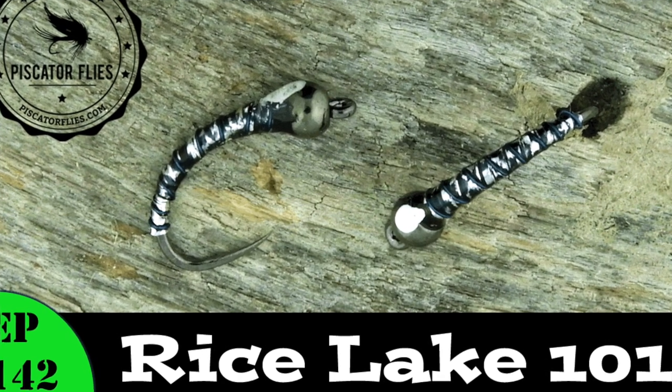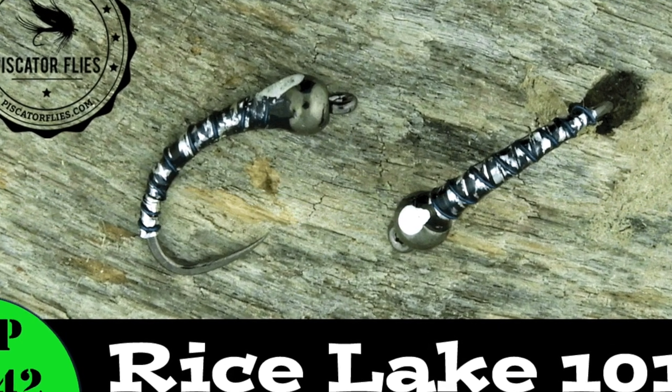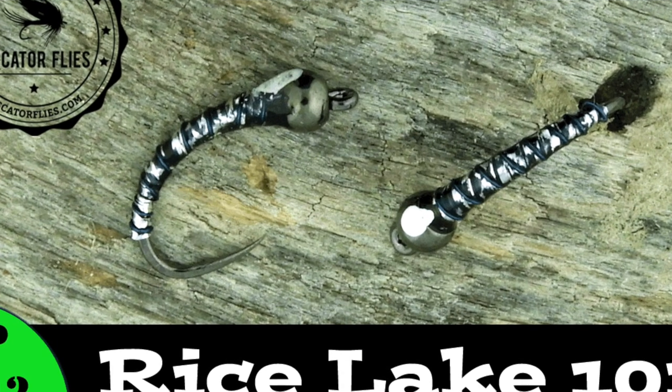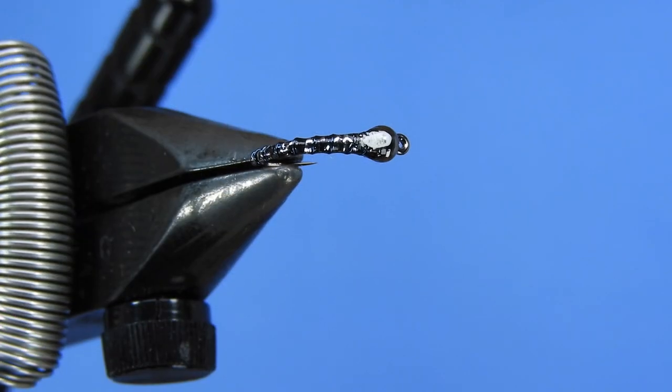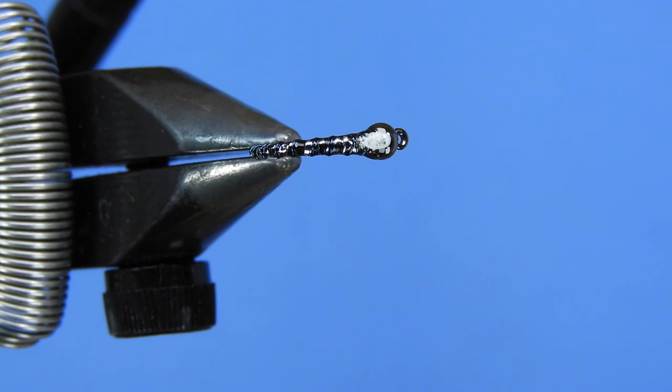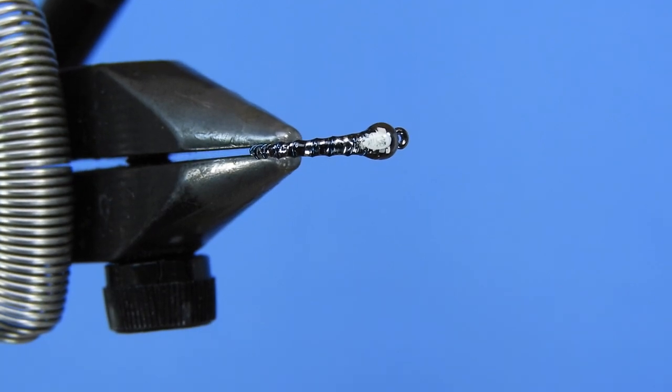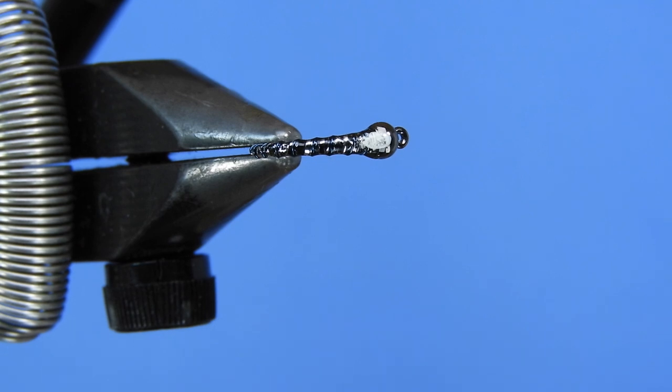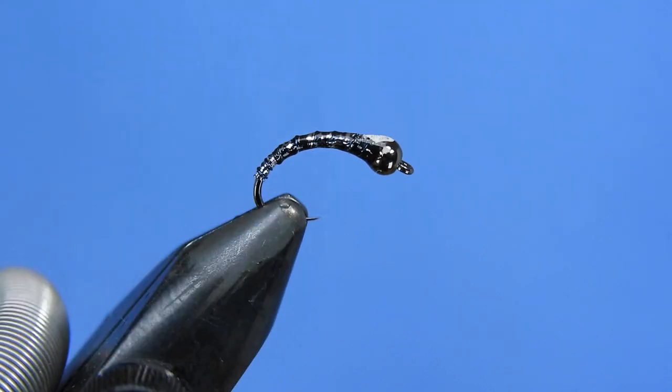Hey threadheads, welcome back to another fly tying tutorial. Today we're going to be tying something I've been developing over the summer. This one is something I call the Rice Lake 101, 101 being a reference to 101 Dalmatians. As you can see by the coloration of this fly, you get a little bit of black and white silver and dark speckling on the finished appearance of this fly.